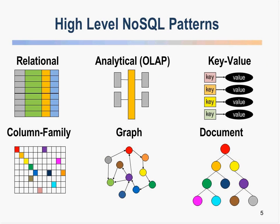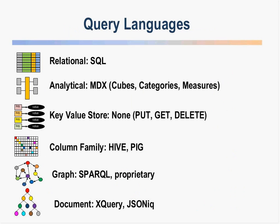Last month, we talked about the high-level NoSQL patterns we're seeing these days. This is our taxonomy of the main types of NoSQL databases. The two on the upper left — relational and analytical — most people are very familiar with. The four new ones added by the NoSQL world are key-value stores, column family stores, graph stores, and document stores. One of the key questions is: do you have to have a different query language for each of these systems? And certainly today, I'd say that's kind of true.